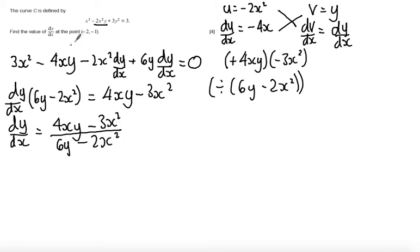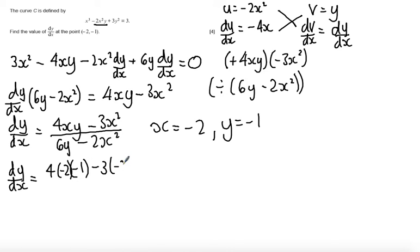So now I want to find the value of dy by dx at the point minus 2 minus 1. So what this is telling me is that I'm going to have to substitute in x equals minus 2 and y equals minus 1. So dy by dx will be evaluated as 4 times minus 2 times minus 1 minus 3 lots of minus 2 squared, all over 6 times minus 1 minus 2 lots of minus 2 squared.